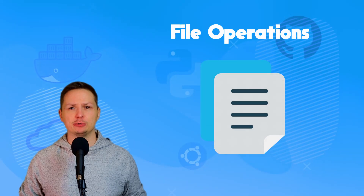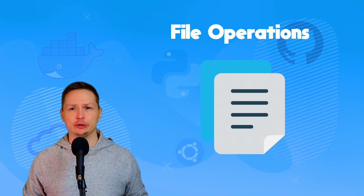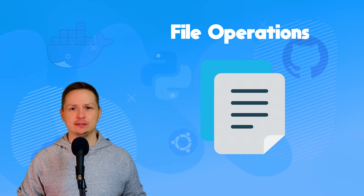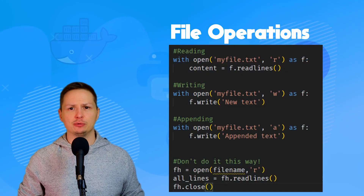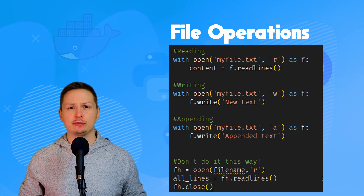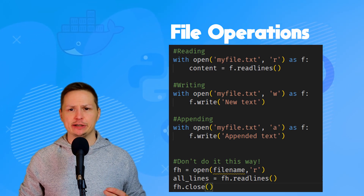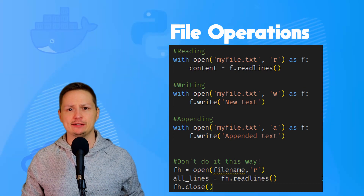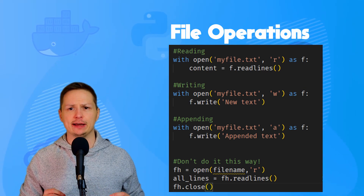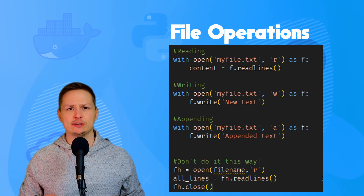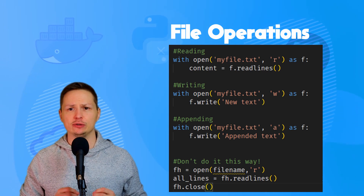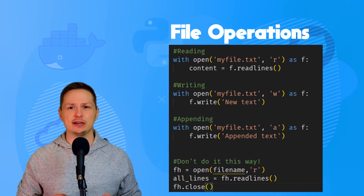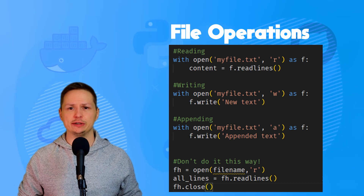Working with files is a common Python operation. A best practice is to use the 'with' statement when opening files. You can open a file as read, write, or append, then perform operations like reading lines or writing out lines. When the 'with' block finishes executing, it automatically closes the file handle for you — which is why it's best practice over manually managing file handle closing.